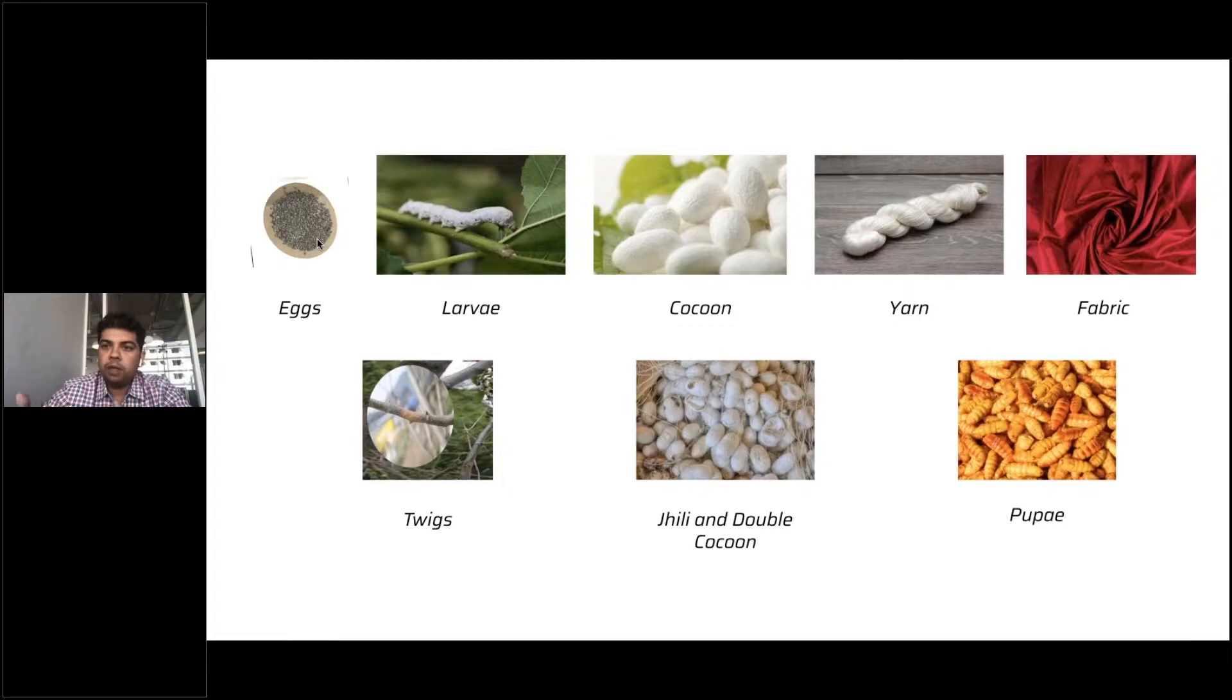They create a cocoon. The cocoon then gets converted into a yarn through a mechanized setup called reeling units. This yarn is then consumed by a weaving unit and finally you get the fabric.